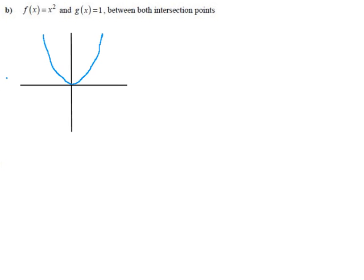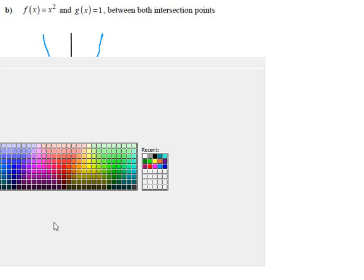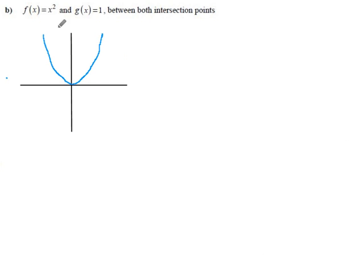Okay, so we're finding an area again here between two curves, and they tell us the curves are x squared, which I've already sketched out, and the second one is just a flat line at 1, which I can probably draw without too much trouble. Looks like that.